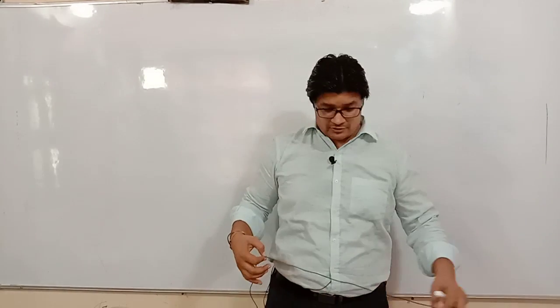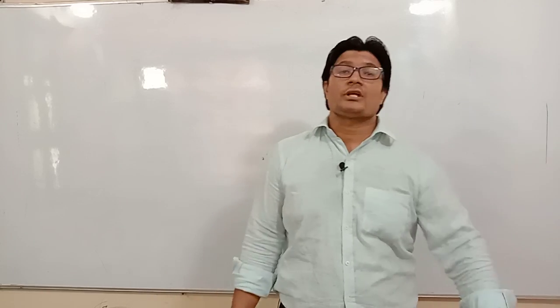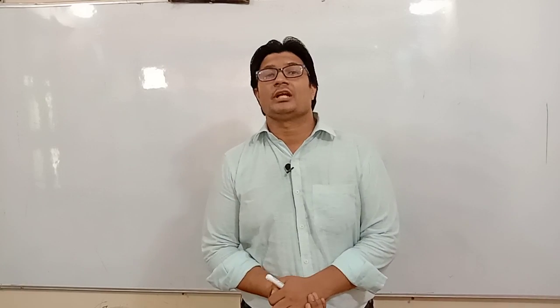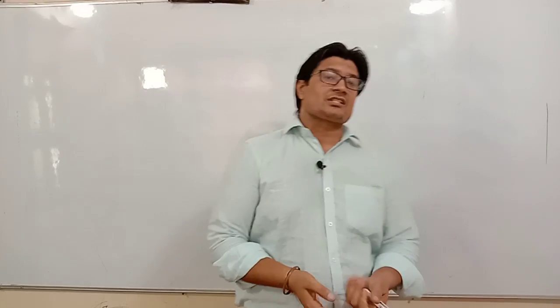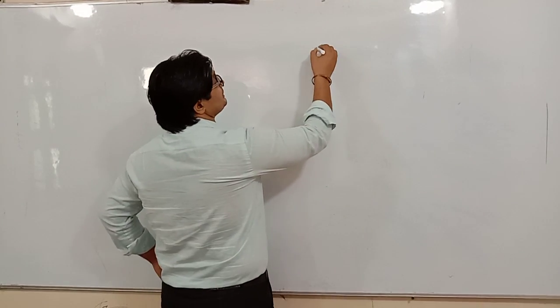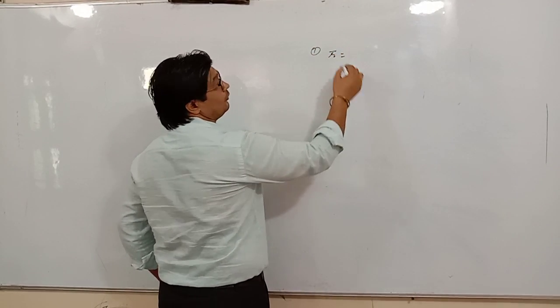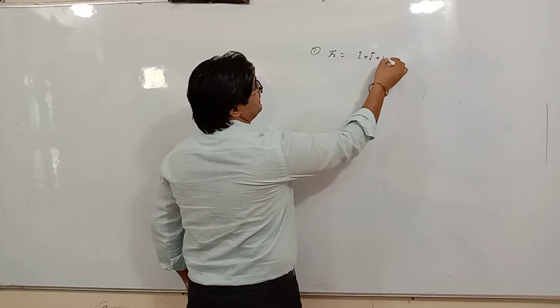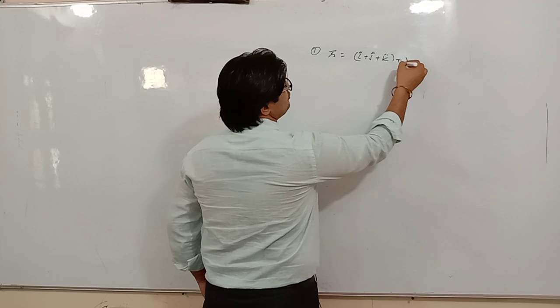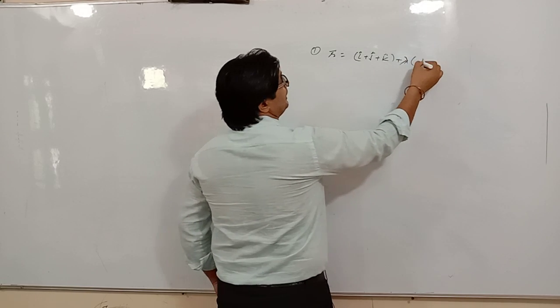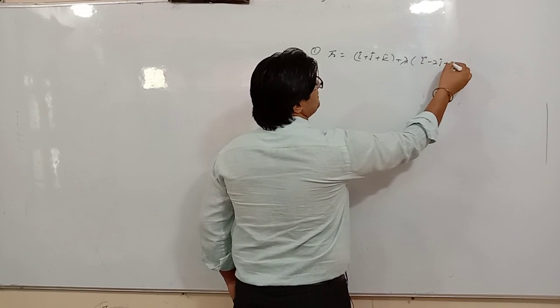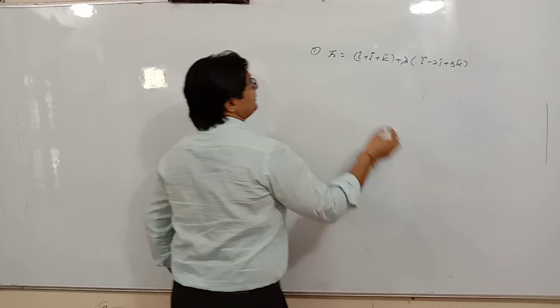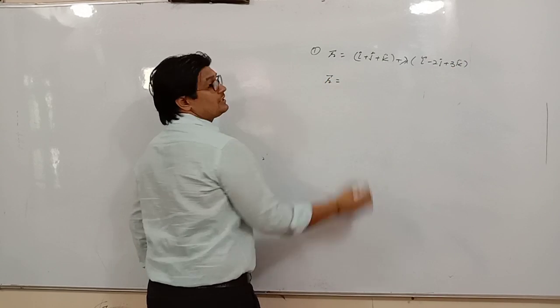Hello students, in this video we will discuss the shortest distance between two straight lines in space. Let's start. Let this be the equation for the first straight line: r = (i + j + k) + λ(i - 2j + 3k). Then the second equation: r =